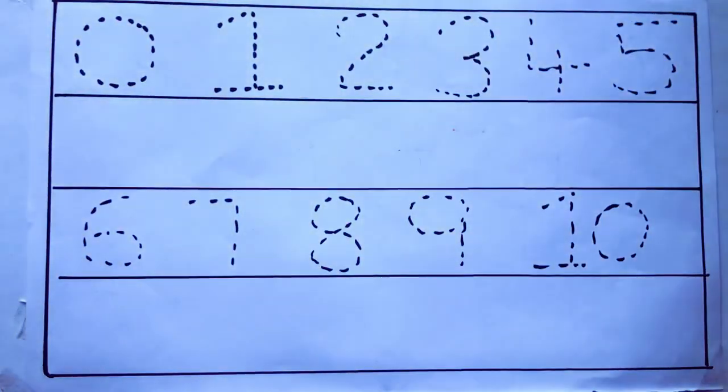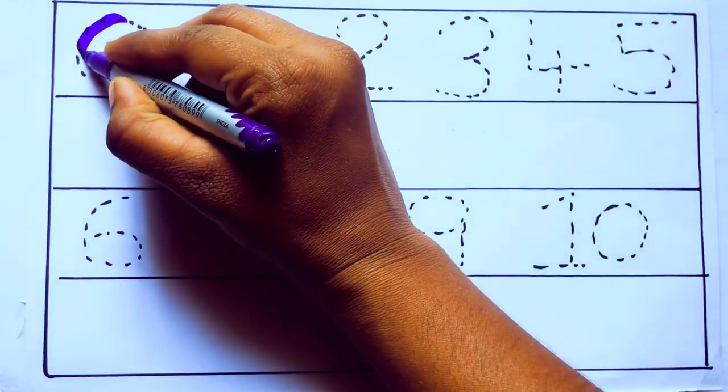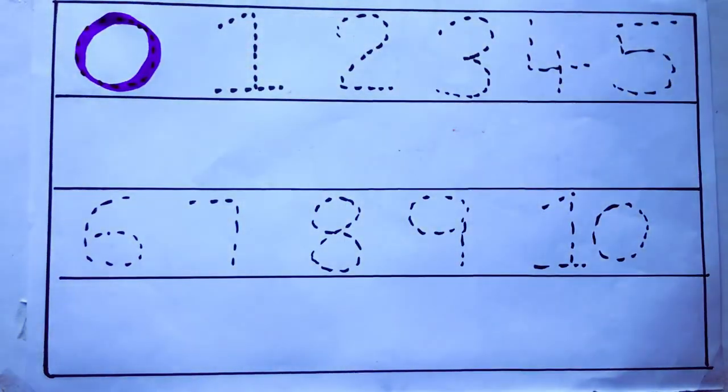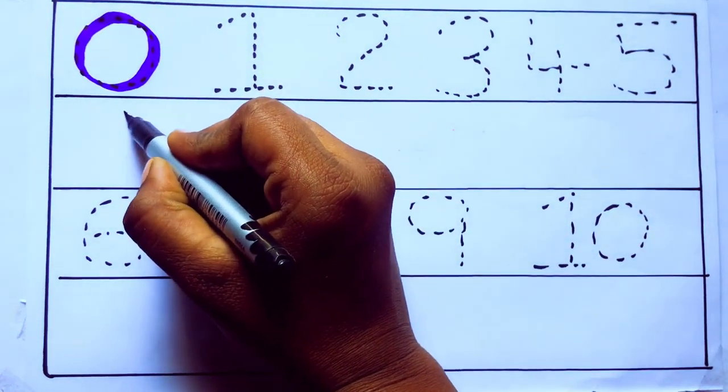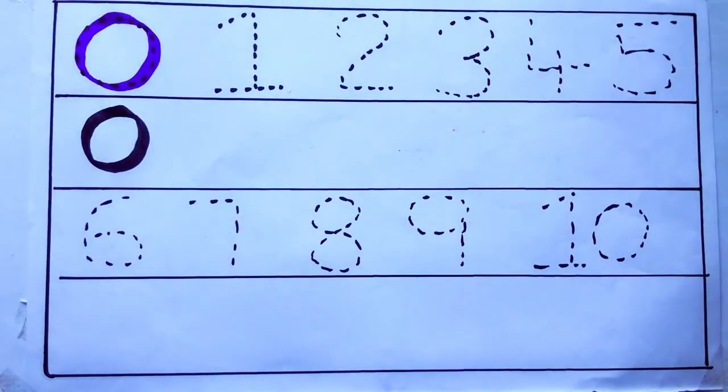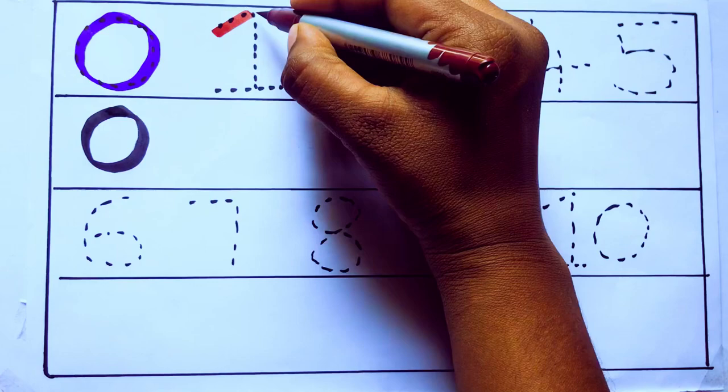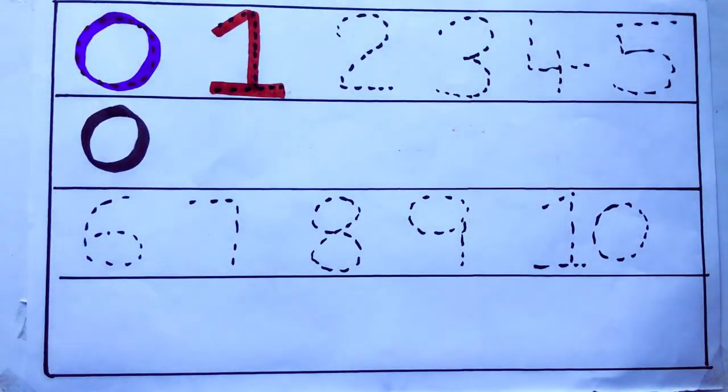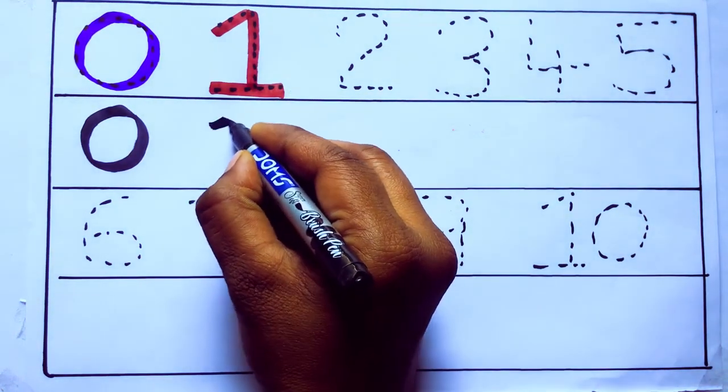Let's draw numbers. Violet color, 0, Z, E, R, O. Brown color, 1, O, N, E, 1, number 1.